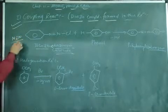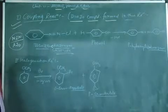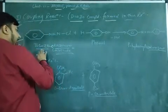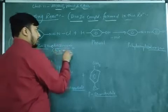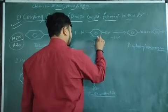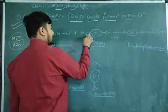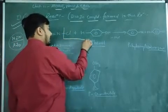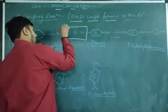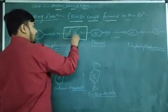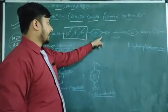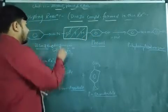Now here in this reaction, when the benzene diazonium chloride is going to react with the phenol, the Cl part from the benzene diazonium chloride and the H from the phenol part is going to be removed. And this phenol ring will be attached with the nitrogen of the benzene diazonium chloride.